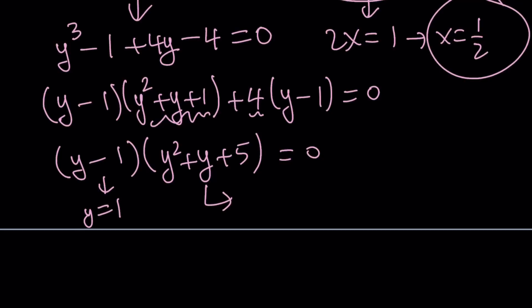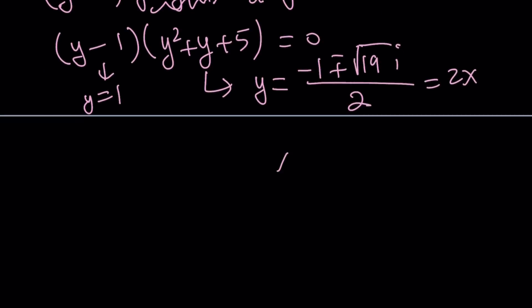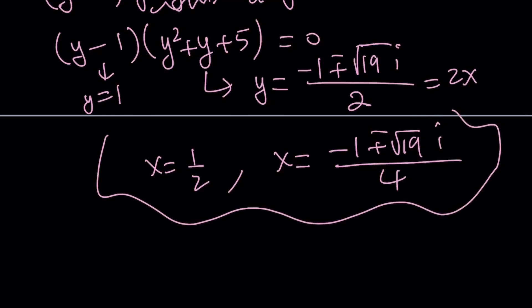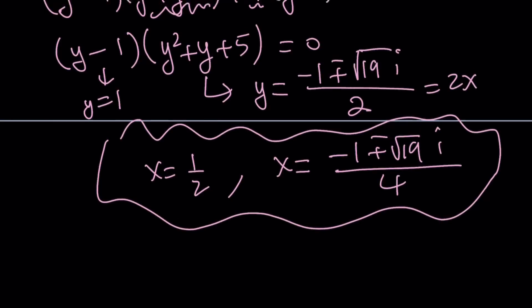But what about the other one? Well, the other one, unfortunately, is not going to give us real solutions. So let's still write them down. Negative b plus minus the square root of b squared, which is 1, minus 4ac, which is 20. 1 minus 20 is negative 19, so we can write it as square root of 19i with the imaginary number. And all of that is divided by 2. And as you know that y is equal to 2x, so half of this is just going to be the x value. So x from here is going to be negative 1 plus minus the square root of 19i divided by 4. And x equals 1 half is going to be the other solution. Since this is cubic, obviously, you expect to get three solutions. And those are the three solutions that you get by using the second method. So that was the second method.